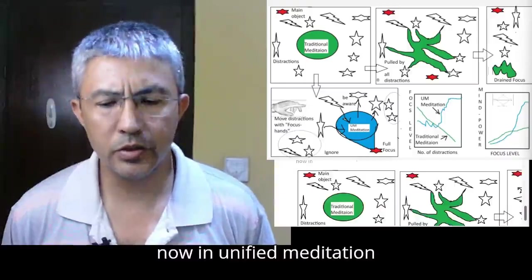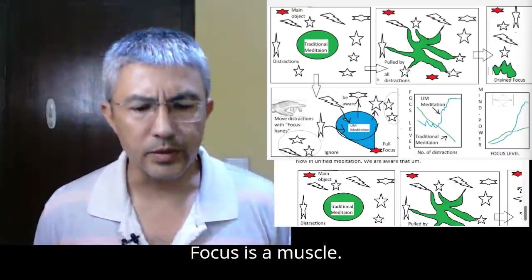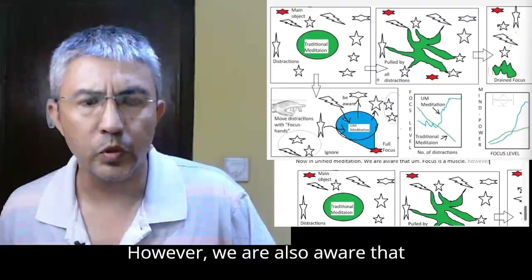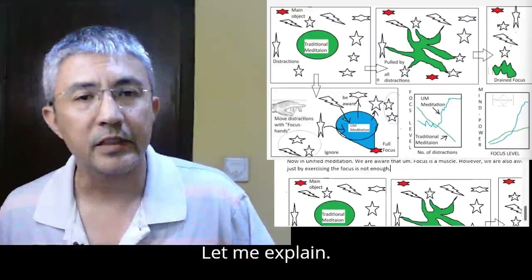Then finally, the outcome is a drained focus shown by the last diagram. The concentration muscle is so tired that it even gives up on the objects of distraction as well as the main object. In unified meditation, we are aware that focus is a muscle, but we are also aware that just by exercising the focus is not enough.